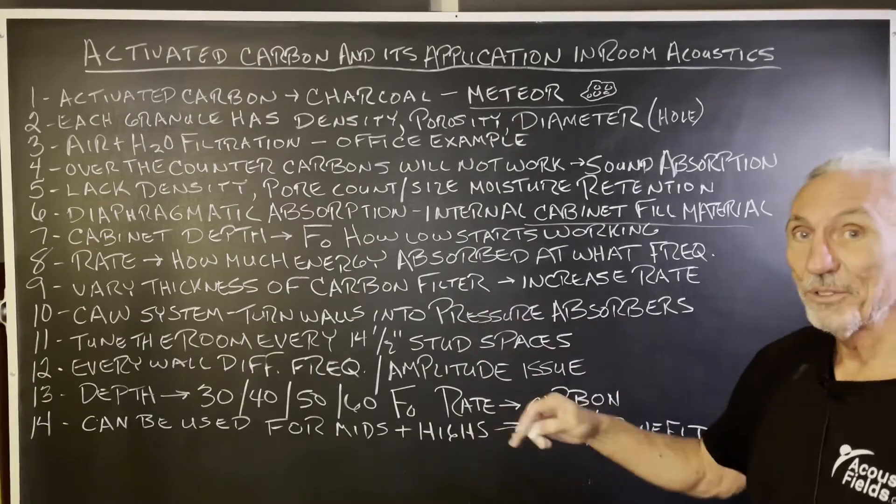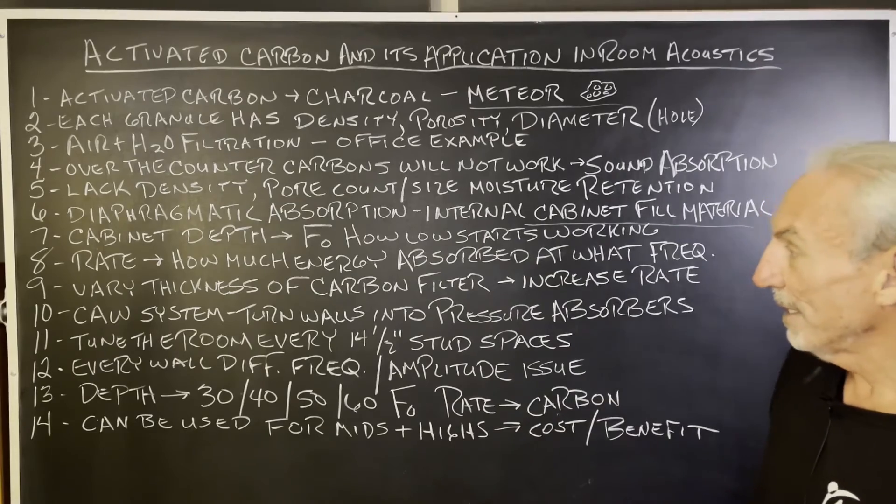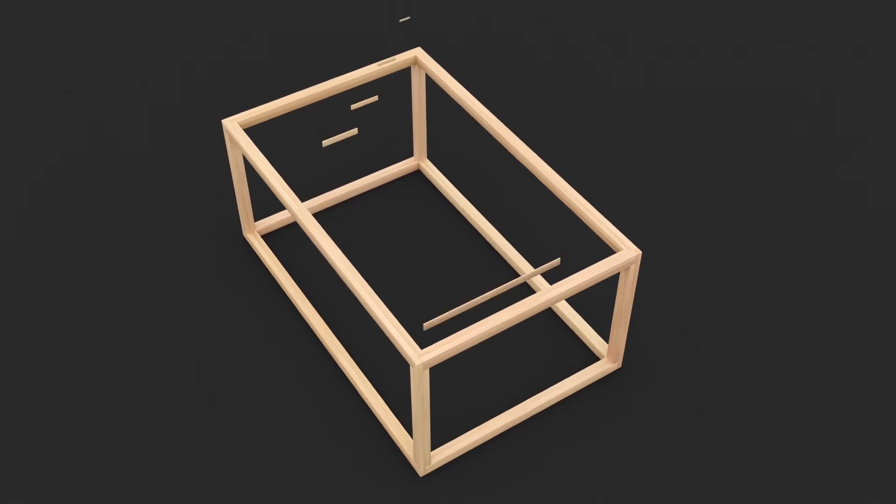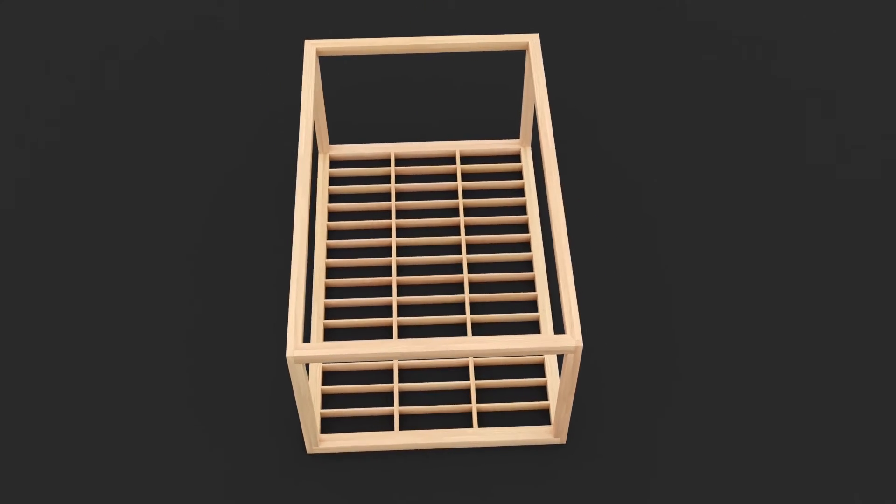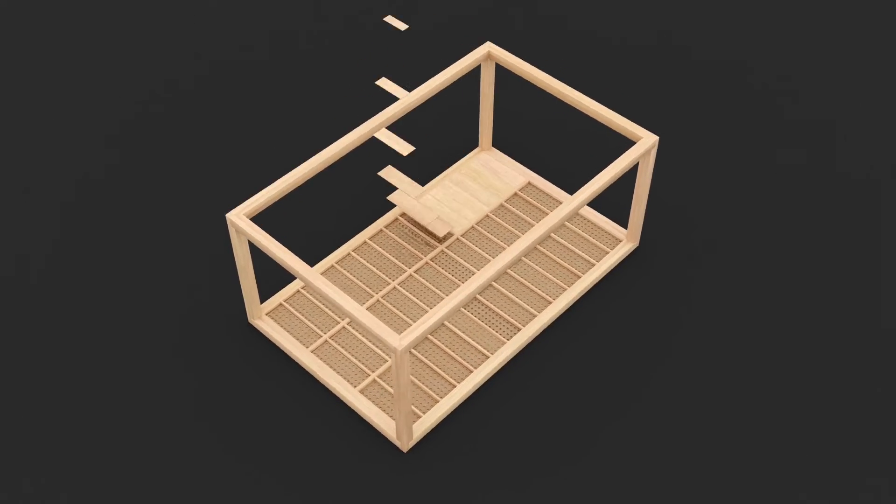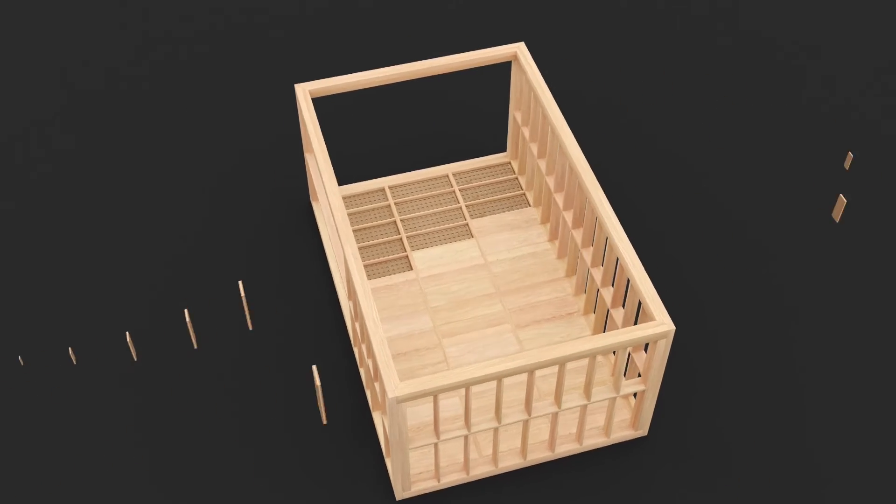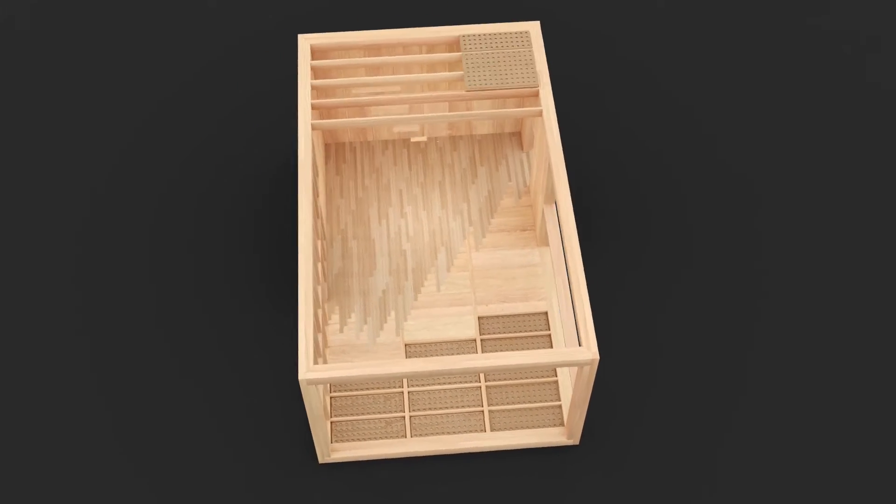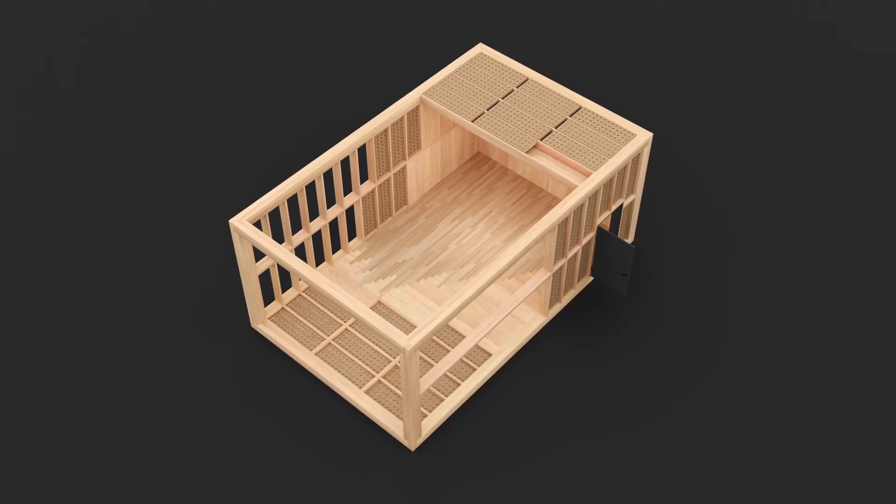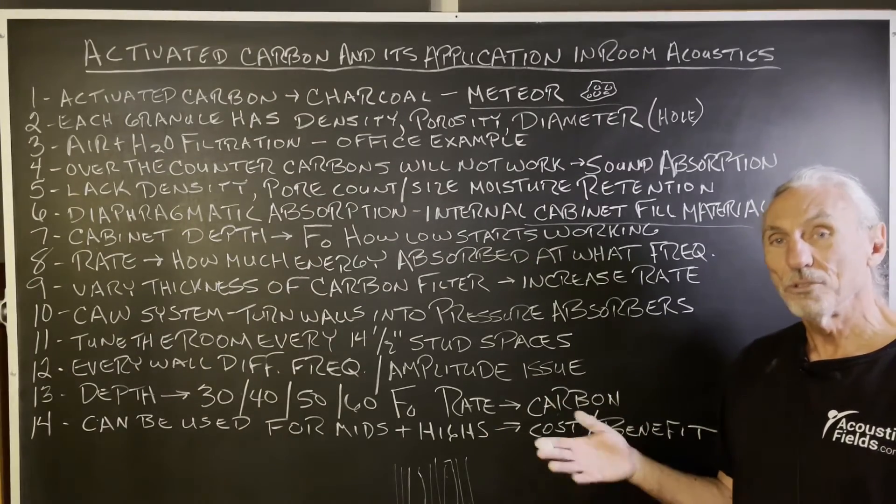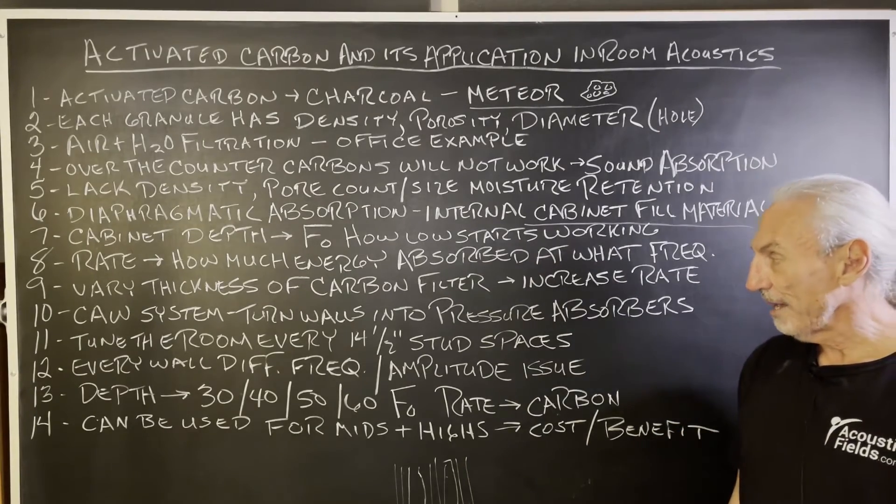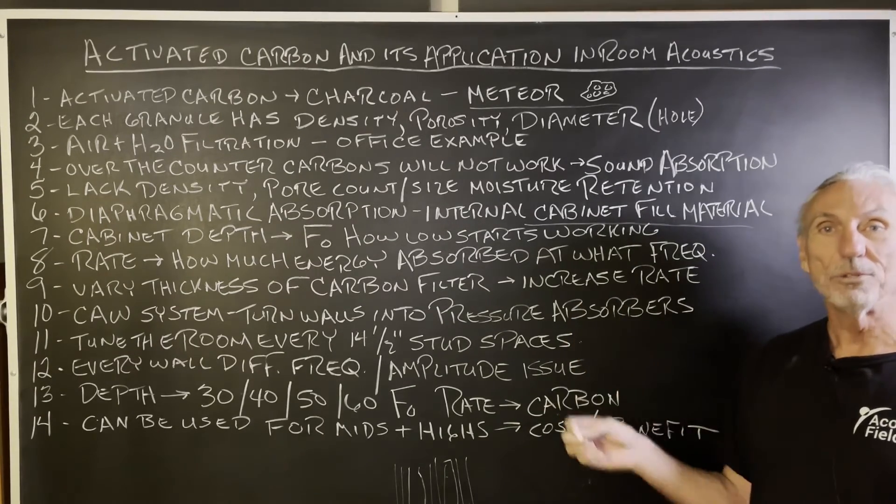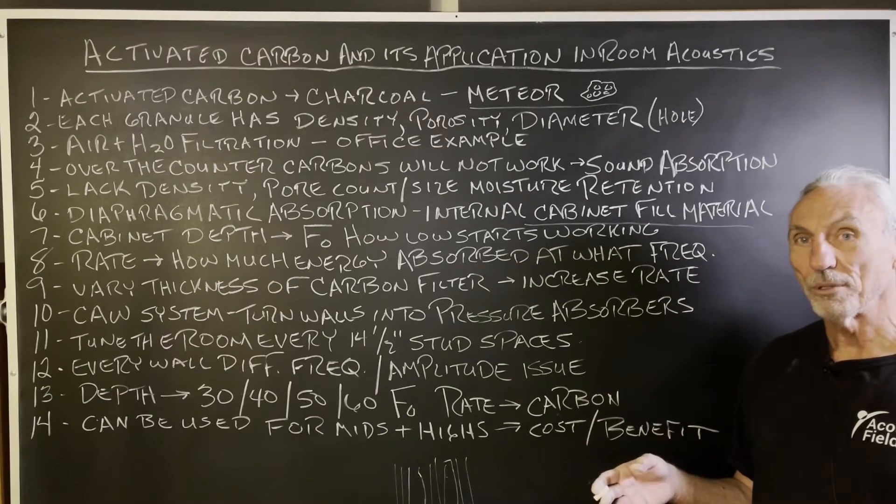We can vary the thickness of the carbon filter to increase the rate. And we do that all the time in our CAW system. We actually tune the room every 14 and a half inches. Why 14 and a half inches? Because 14 and a half inches is the distance between studs on a 16 inch on center wood frame wall. So we frame out our rooms with two by twelves. And then the carbon filters go between the studs. What is this? It's a diaphragmatic absorber. The studs are the sides of the walls. We have a back and a front. So we can tune the room every 14 and a half inches. And that's a really good benefit when you're dealing with low frequency pressure. We turn the whole wall into a diaphragmatic absorber.